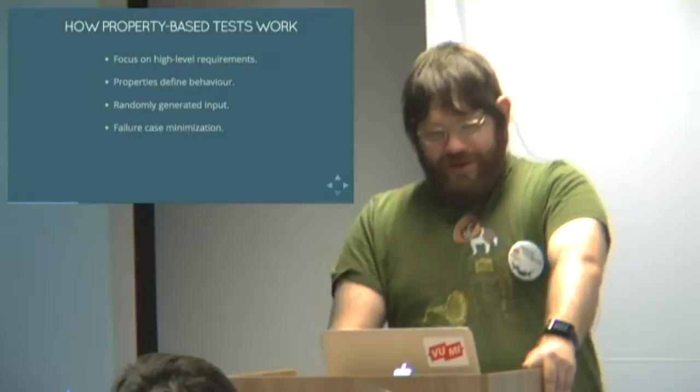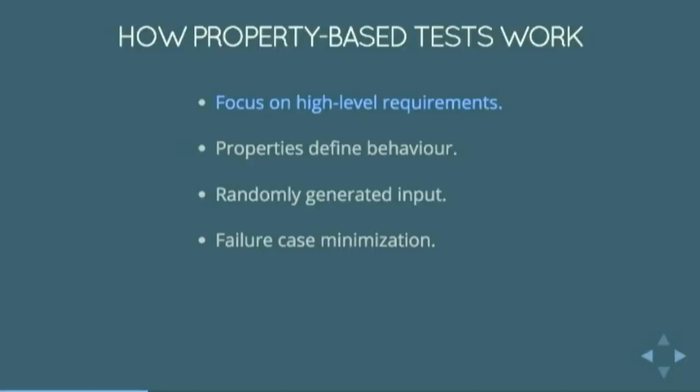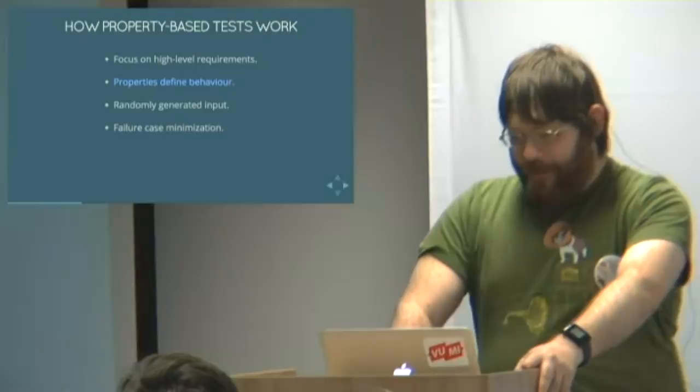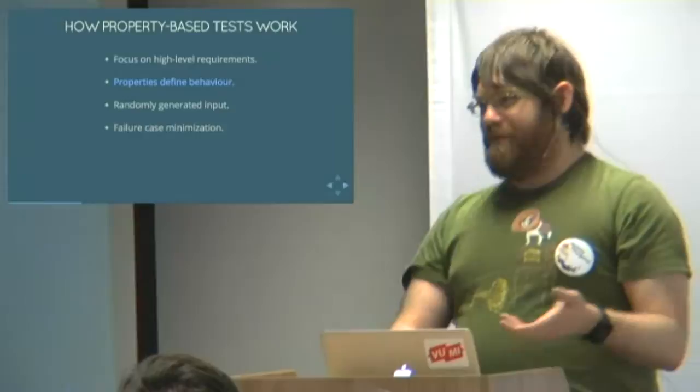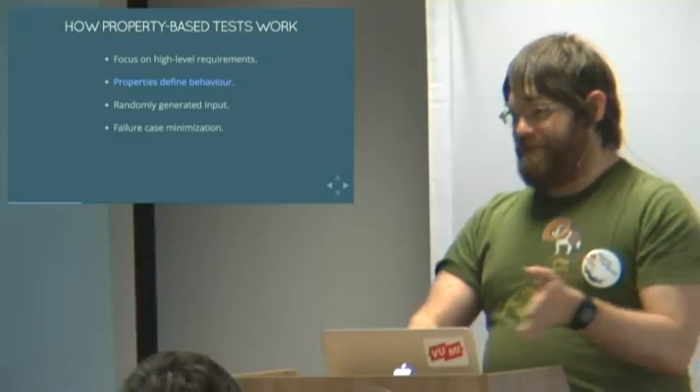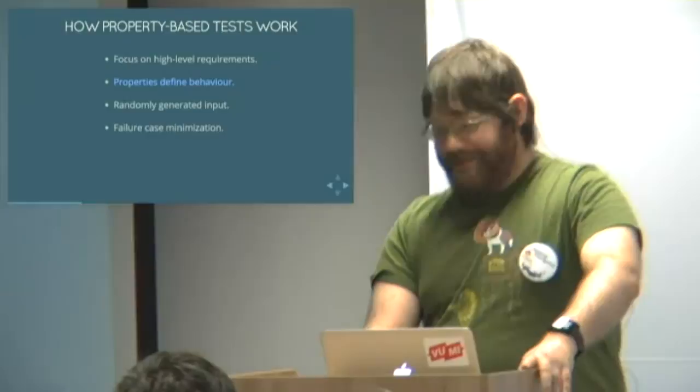Or at least in this case a priority queue where you put everything in first and then take it all out again. Because more complex stuff won't fit on a slide. But these are meaningful. It's much more meaningful than saying put B, C, and A into my queue and make sure that I get A, B, and C out. These are more general. So that's an example of property-based testing. The focus is on high level requirements. You're not looking at specific input and output. You're saying what is the meaning behind this code? What is it actually supposed to be doing?